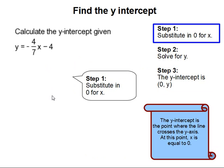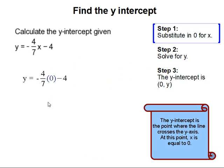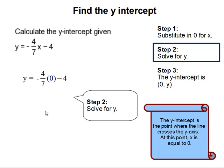Step 1: Substitute in 0 for x. x becomes 0. Step 2: Then we are going to solve for y. 0 times negative 4 over 7 is 0, and 0 minus 4 is negative 4.